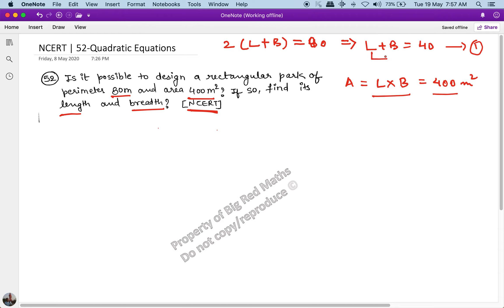So let me replace the length with 40 minus B. If I replace L with 40 minus B, I get a quadratic equation: (40 - B) times B equals 400.